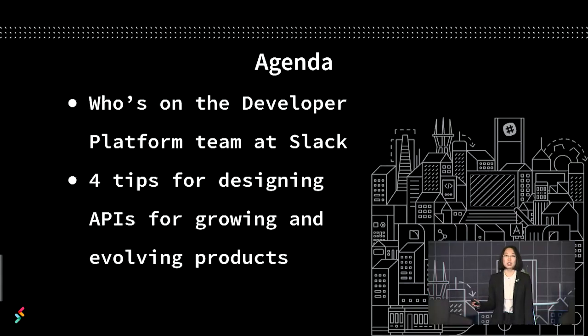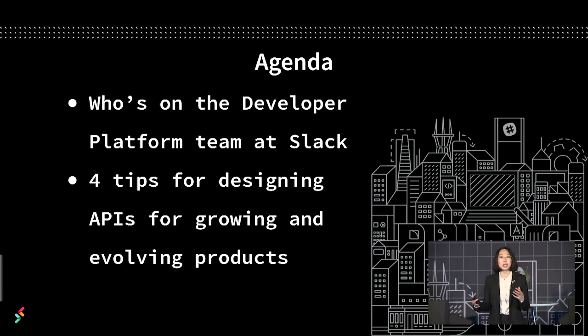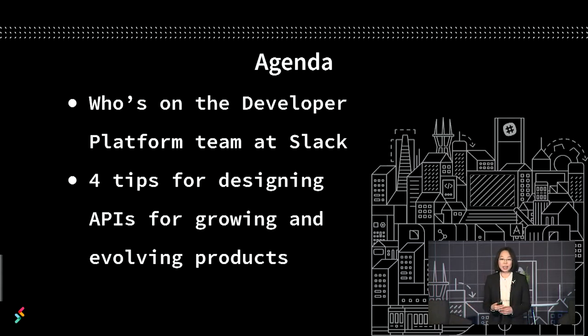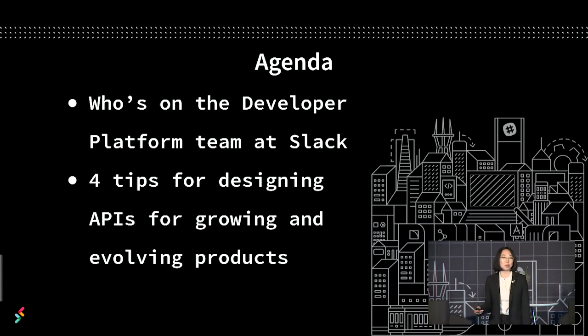So what's on the agenda today? I'm going to talk about who's on the developer platform team at Slack and how that's structured, so you have a little bit of context about who makes what kinds of decisions and who's designing APIs at Slack. And then I'm going to give you four tips for designing APIs for growing and evolving products.